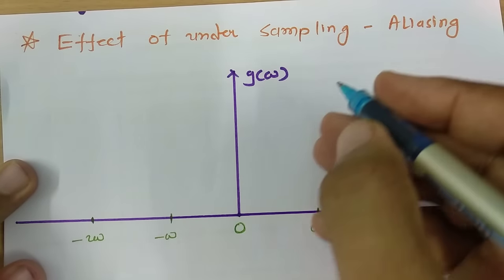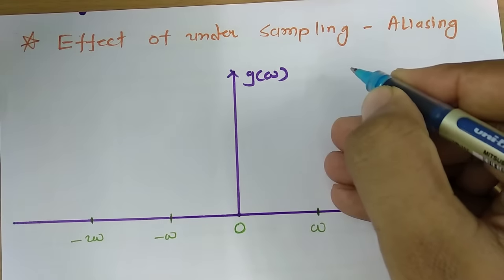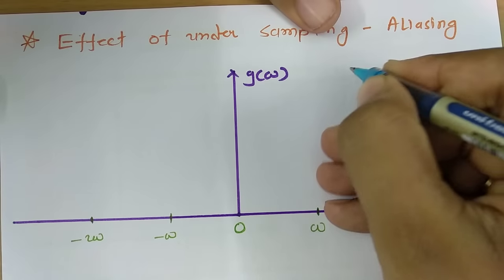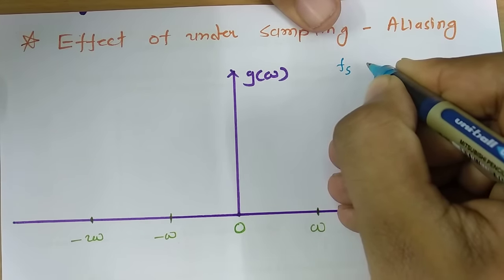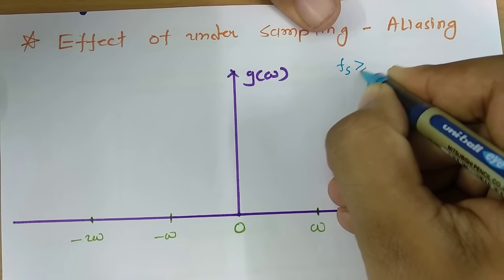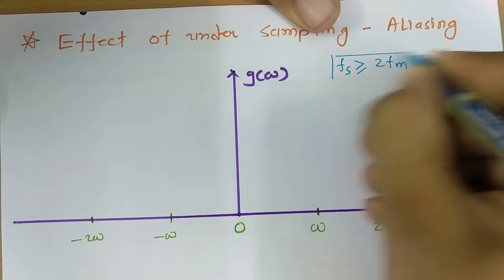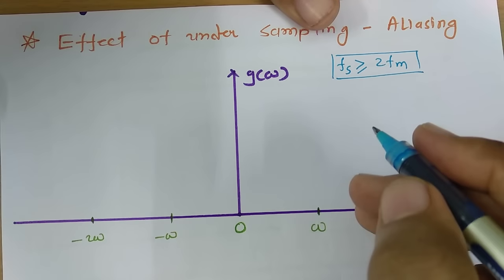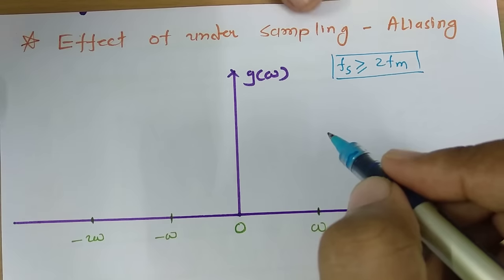To understand this, we need to revisit our previous session where I explained sampling. In sampling, the sampling rate fs should be greater than or equal to 2fm. Let's understand why it should be greater than or equal to 2fm.